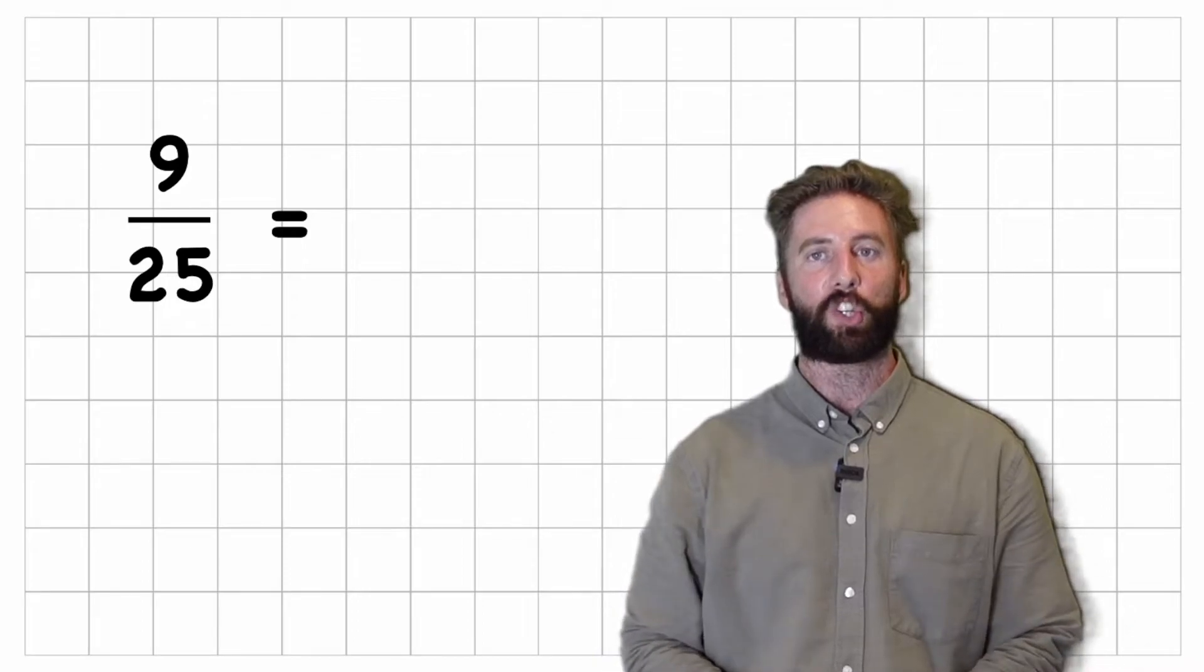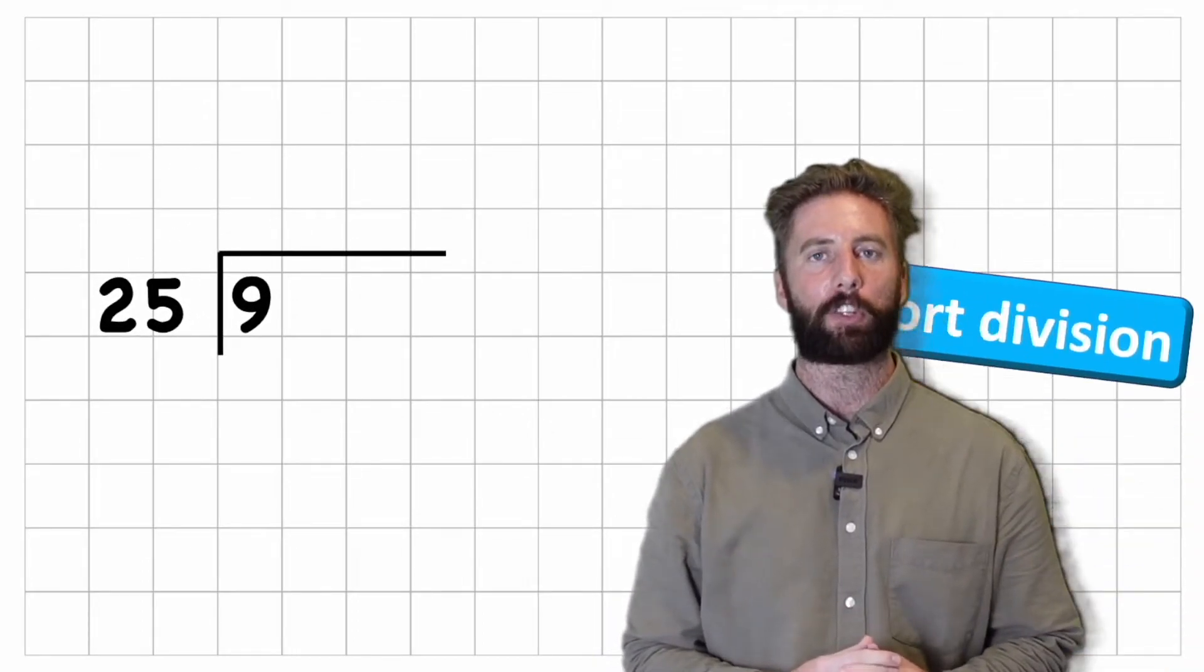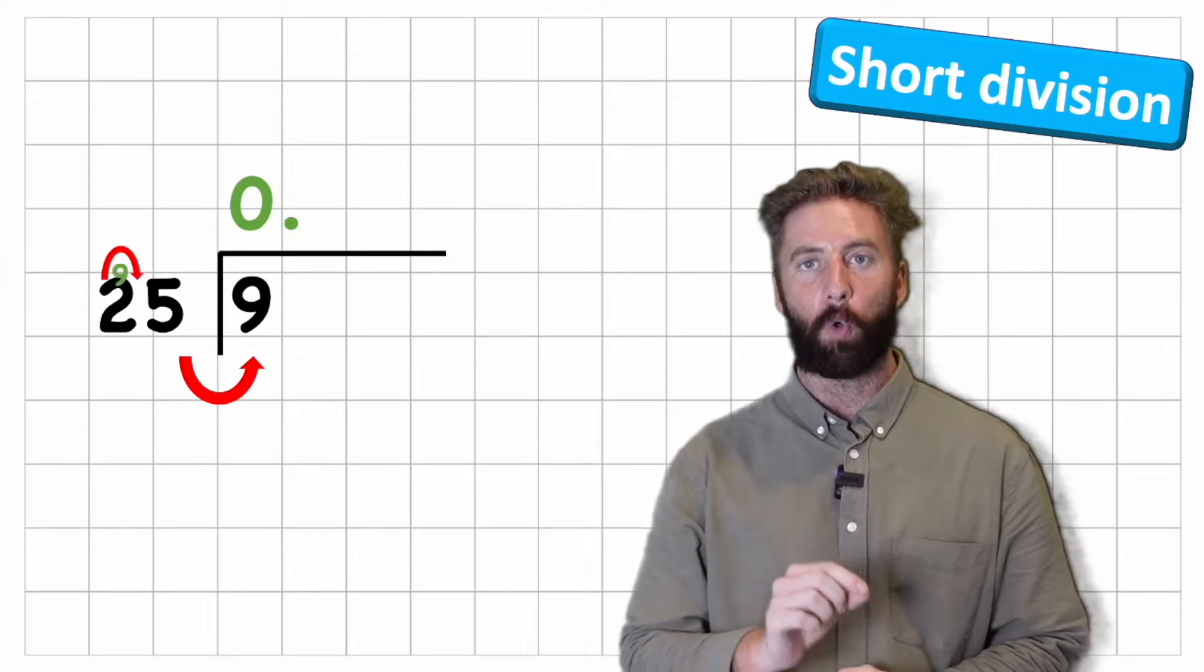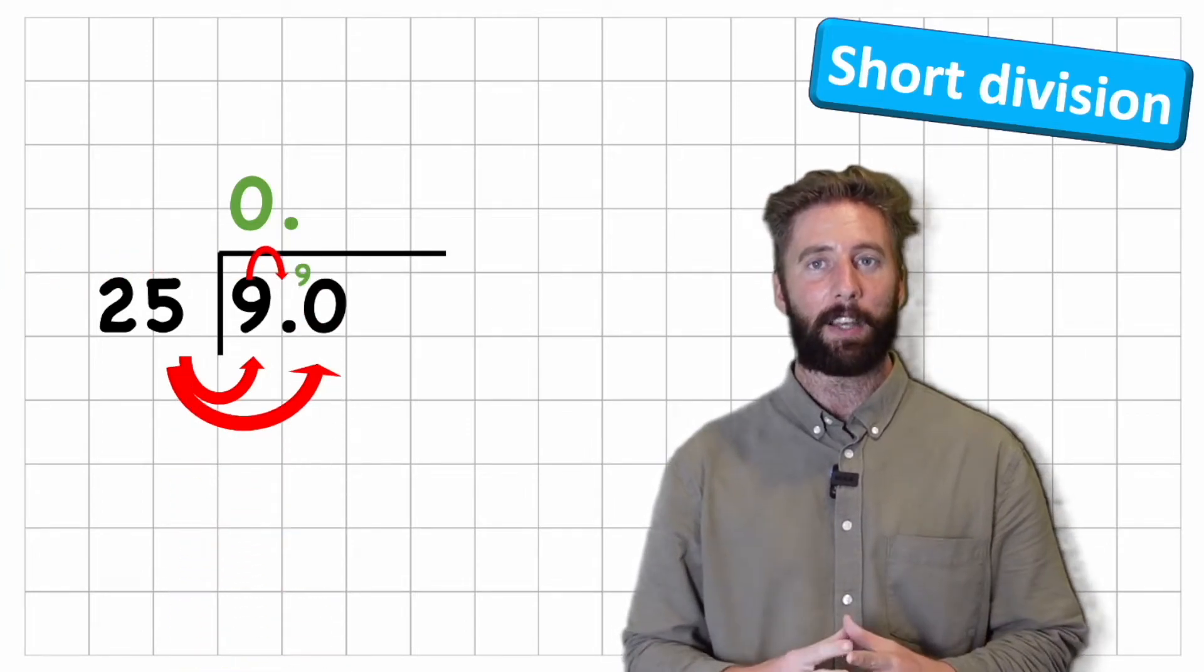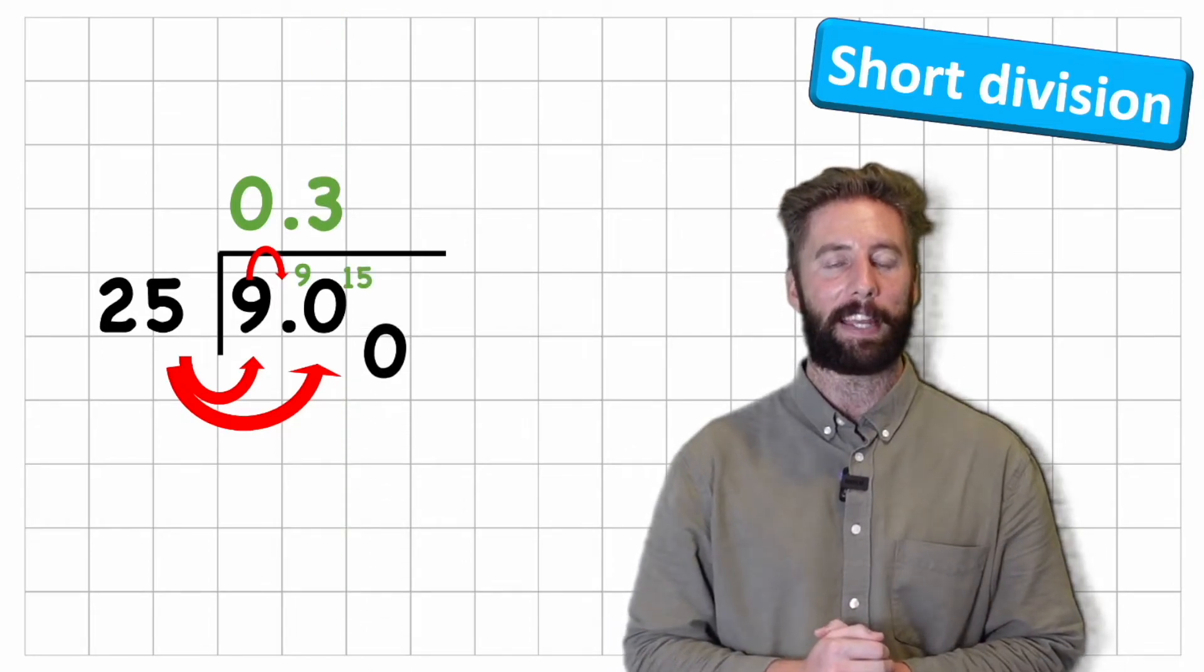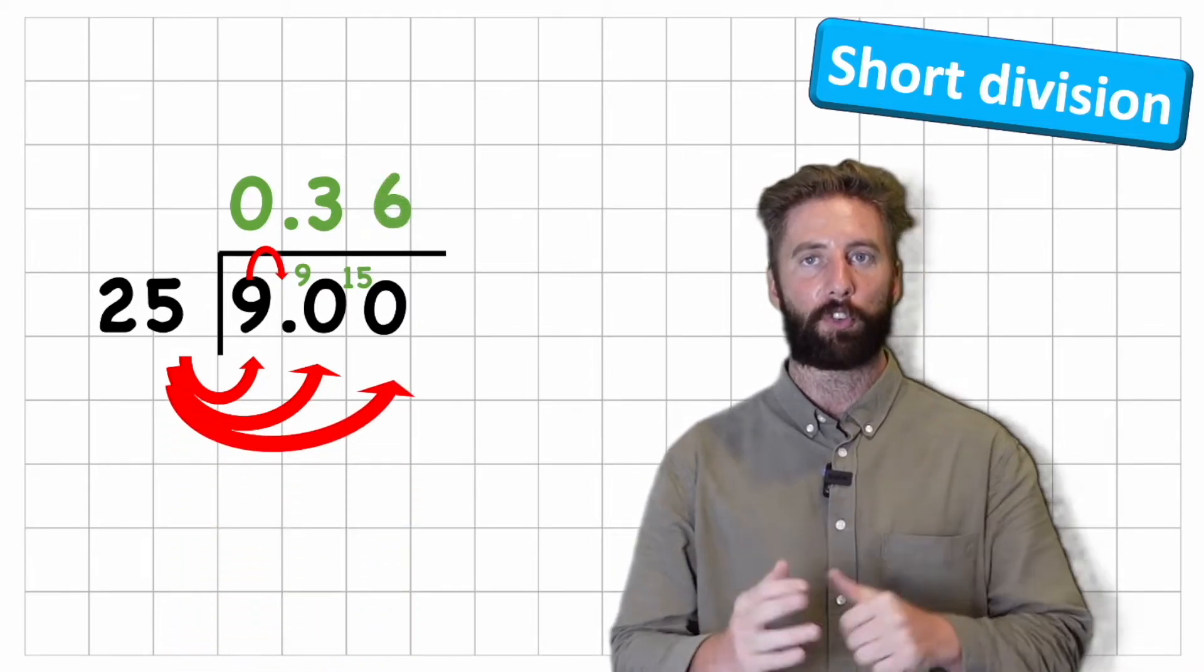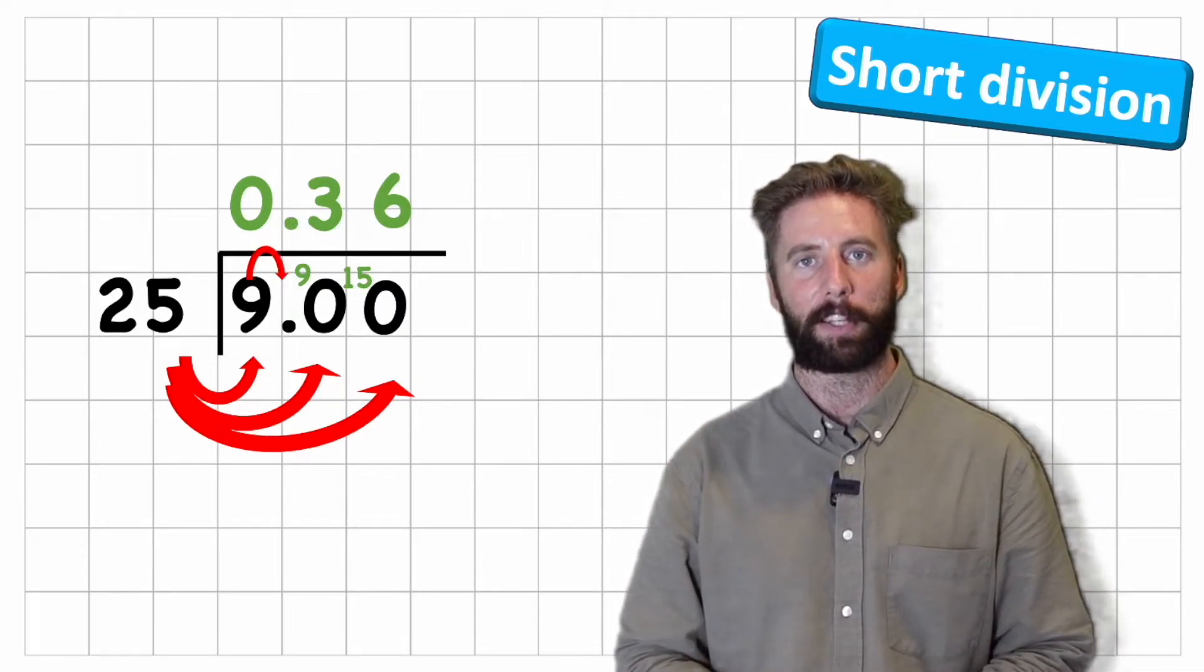But let's have a look at that in short division too. So I have 9 divided by 25 again but this time I'm going to try and ask how many 25s are there in 9? There are 0. Put back my decimal but I have to roll that 9 across the next column. How many 25s in 90? Well we have 3 and how many do I have to roll across? 15. But don't forget to add that next zero so I actually have 150. How many 25s in 150? That's right 6. So the same answer 0.36.